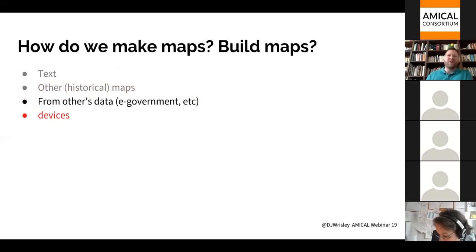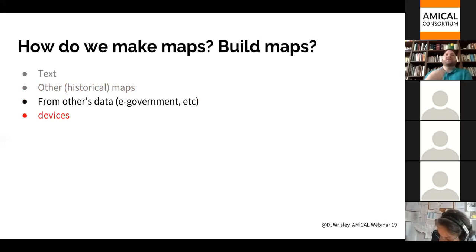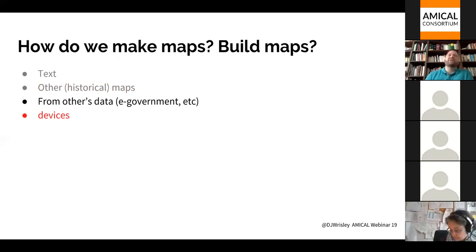Another place we can build maps is from other people's data. GIS librarians often point you toward e-government data. But e-government data works in certain parts of the world and doesn't exist in others — so the data landscapes of various institutions on this call are not the same, and different people inside the consortium will need to think differently about where they can take their data. We can also make maps based on devices. The smartphone is probably the most generalized and democratized geolocating device — even the most basic smartphone has the capacity to geolocate, and certain apps allow us to leverage that geolocation to move through space and record things intentionally.